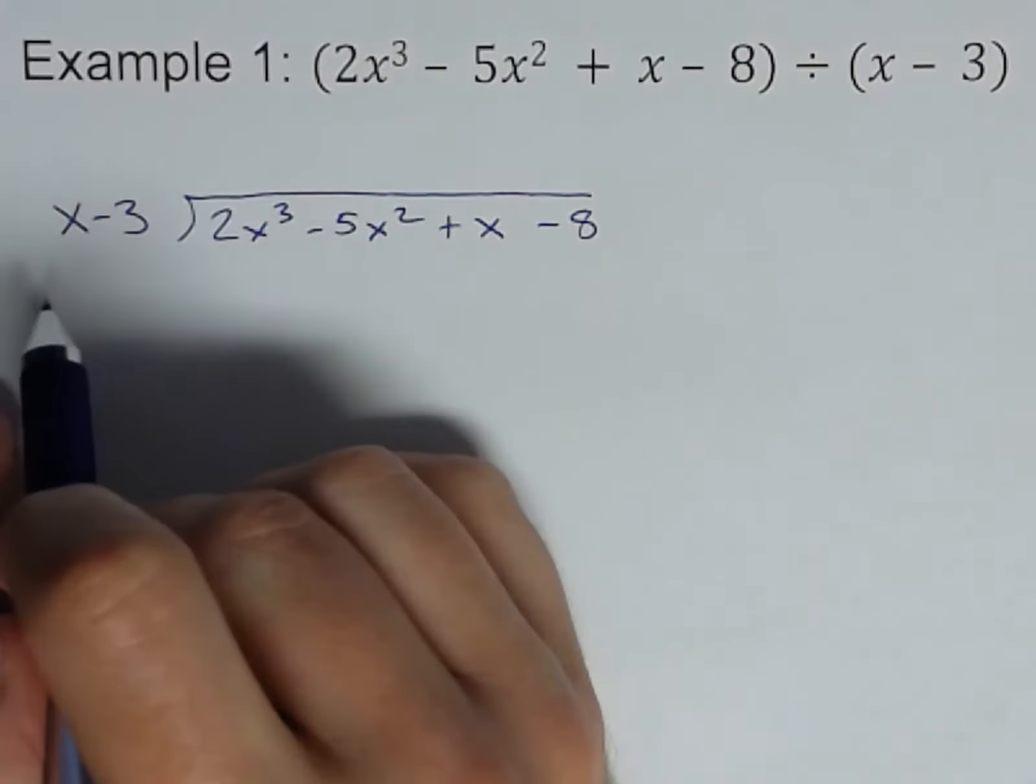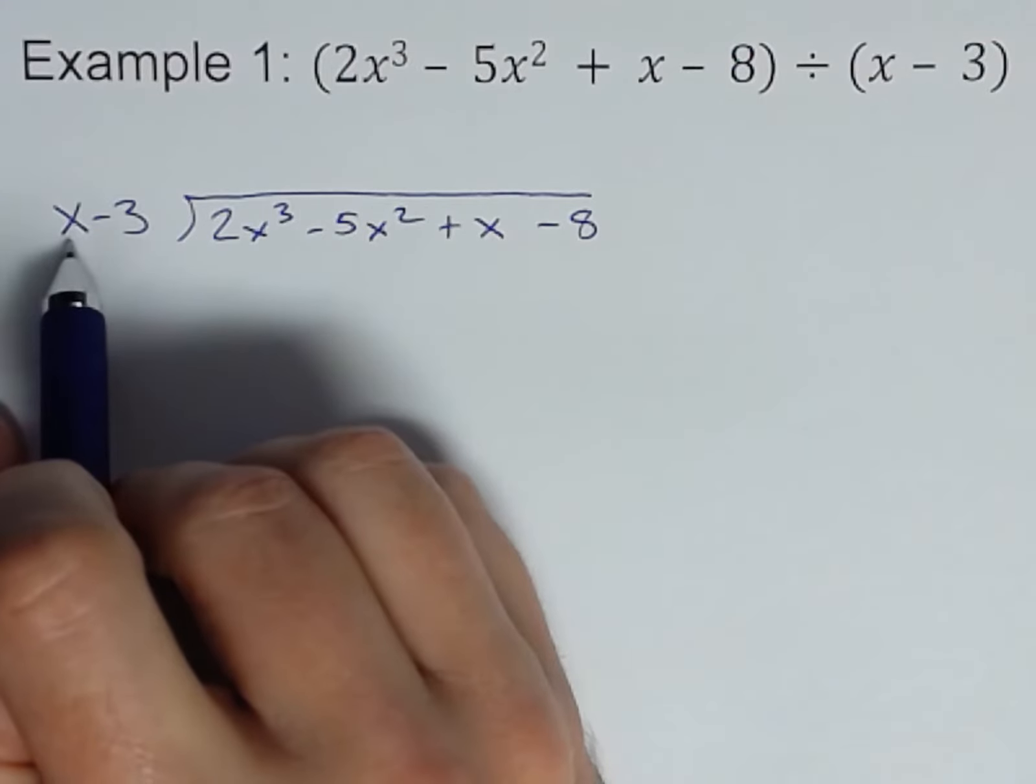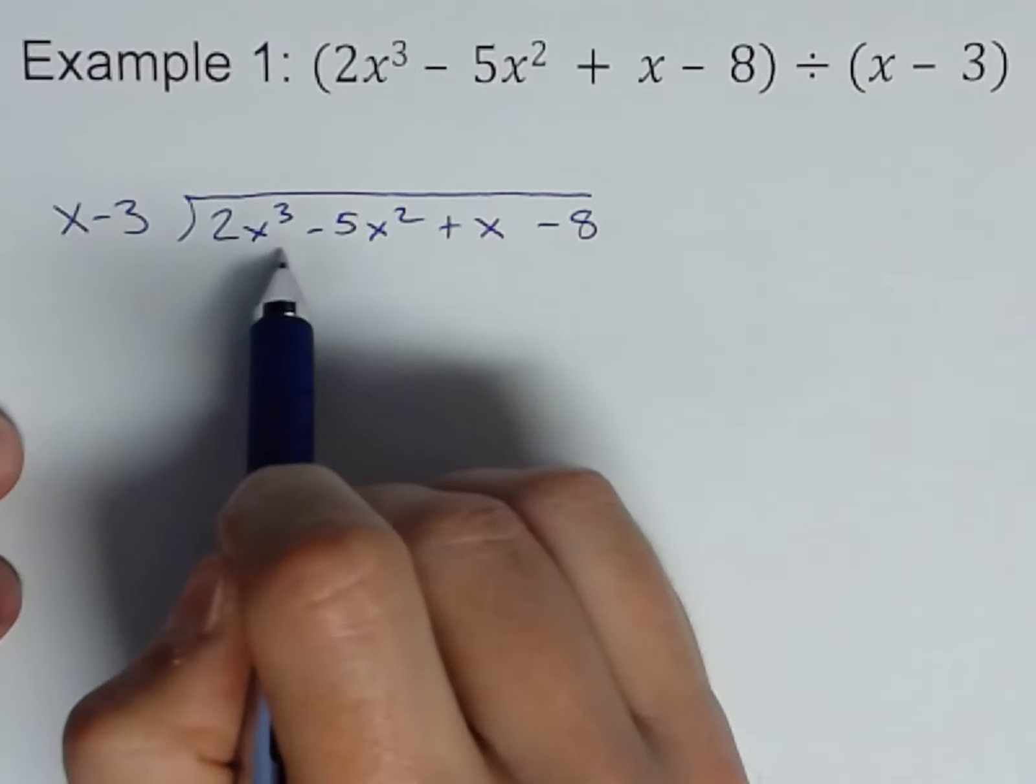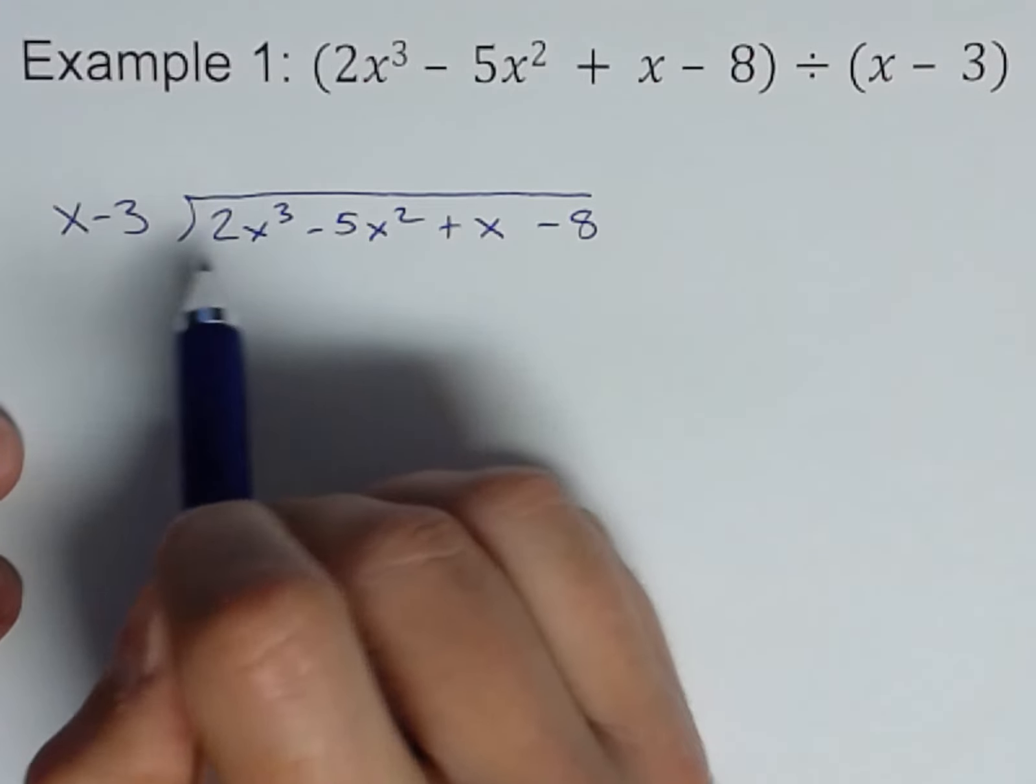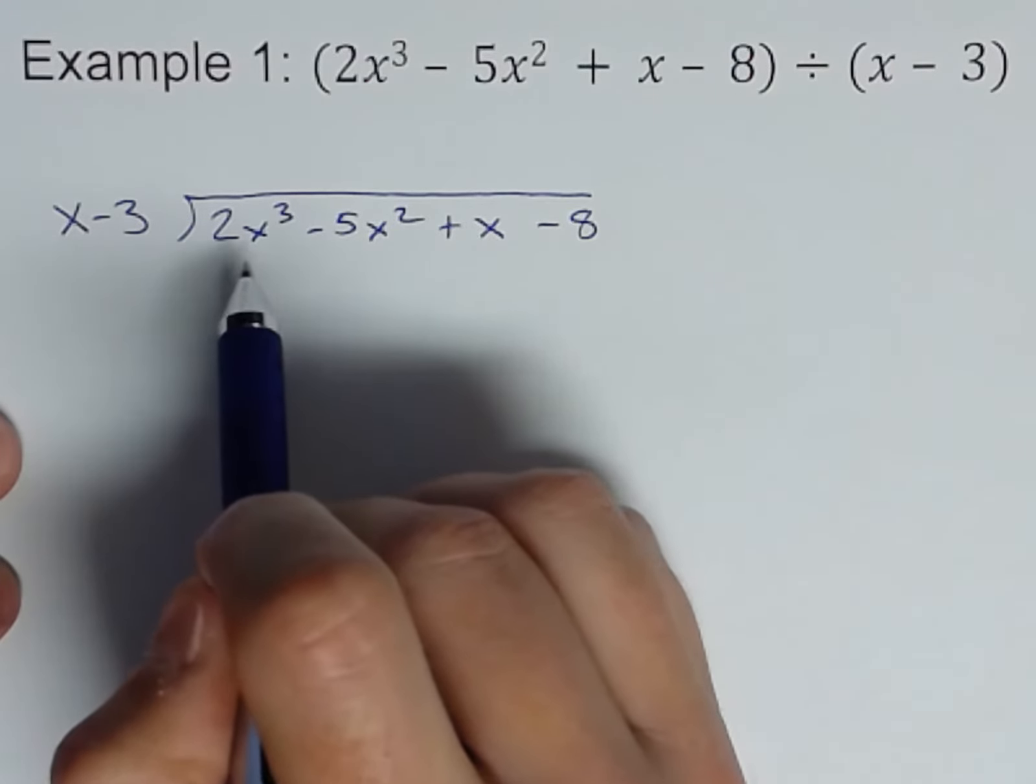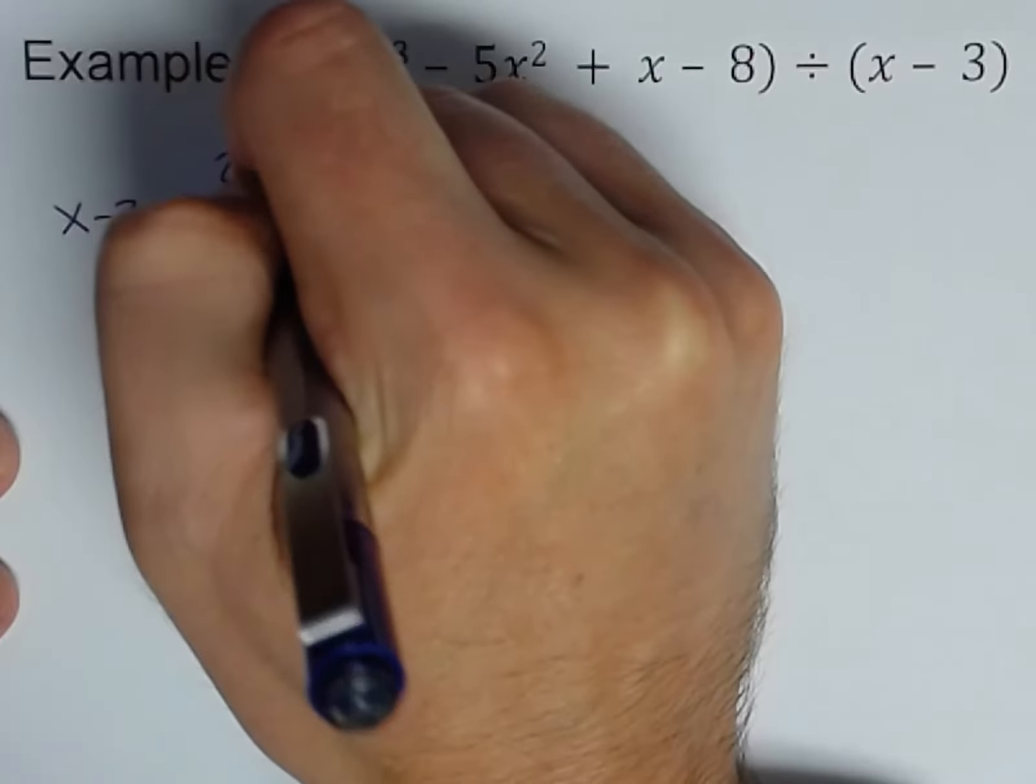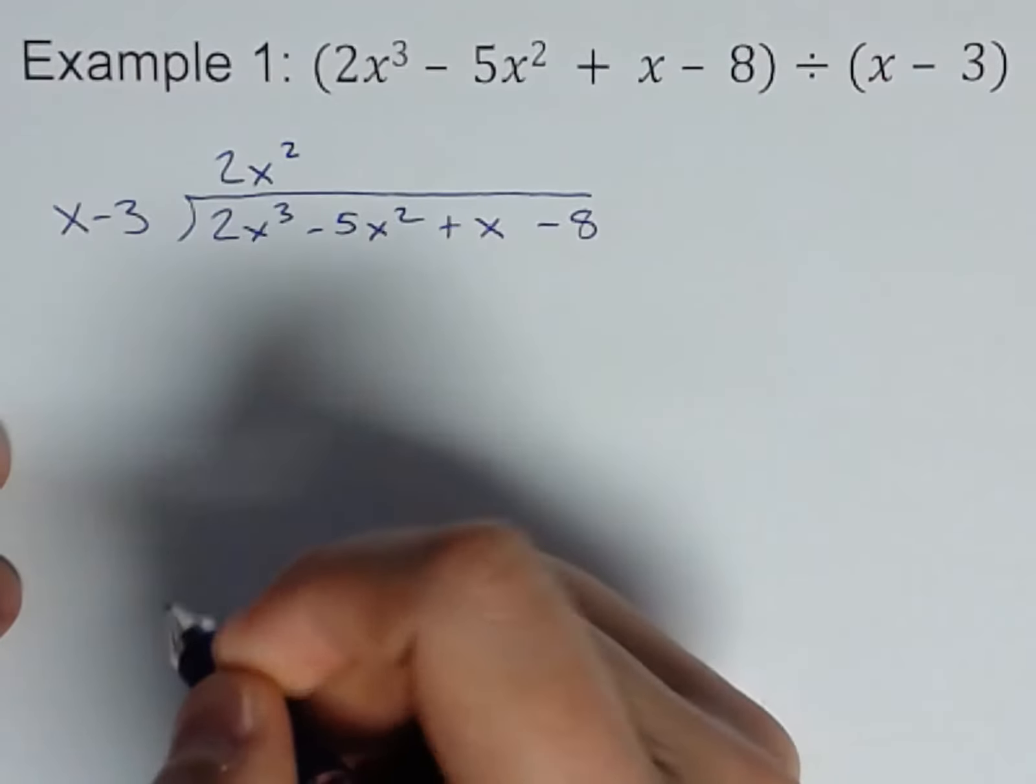Now here's what we do with this first guy. How many times will x go into 2x³? Another way to think of that is x times what would be 2x³? Well, that's going to be 2x².